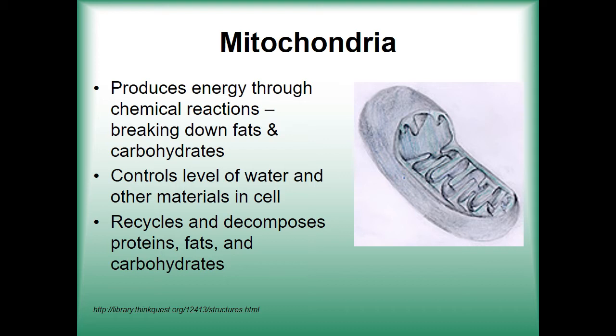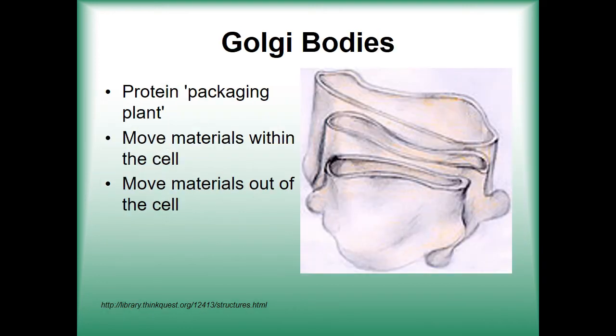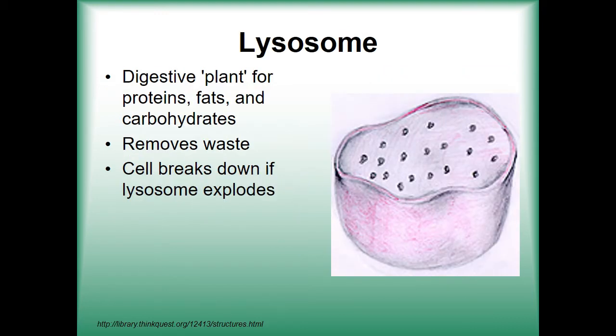Up next is the messenger of the cell — the Golgi bodies. They are considered as such because of their role in packaging nutrients that circulate within the cell and waste materials that need to be transported out. With regards to waste material and dead cell parts, we have the lysosome, which does the recycling and waste collecting within the cell using digestive enzymes contained within it.